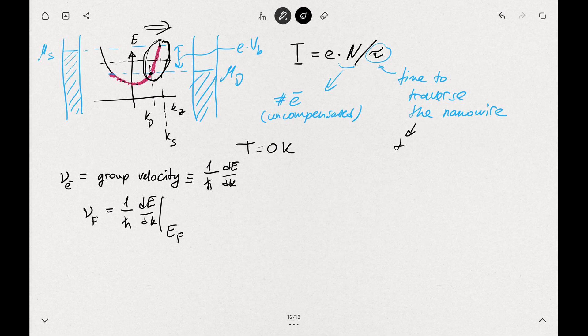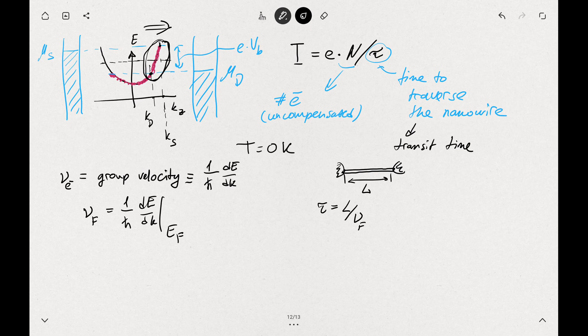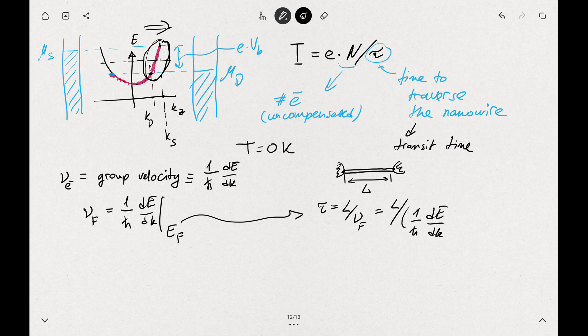Now the transit time. It would be related to the length of the wire. So we have our two contacts and the nanowire here. Let's label it L. The time would be the length over the velocity. We use our Fermi velocity from here, so you get L over 1 over h bar dE/dk. That part is now fine, that was the first ingredient.